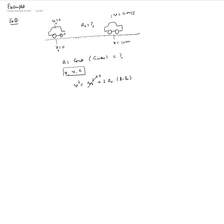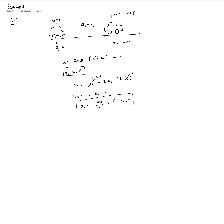Initial velocity is zero and s₀ = 0, so we get 10² = 100 = 2·a₀·10. Solving: a₀ = 100 ÷ 20 = 5 meters per second squared. That's the answer.